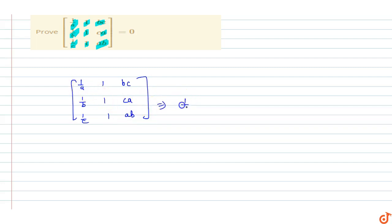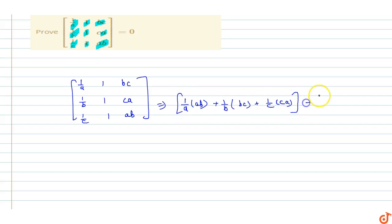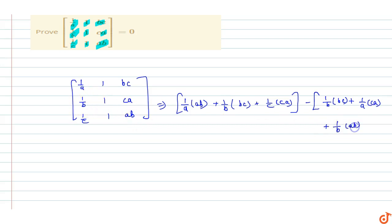Expanding the determinant, we get: 1/a into bc, plus 1/b into ca, plus 1/c into ab, minus 1/c into bc, plus 1/a into ca, plus 1/b into ab.